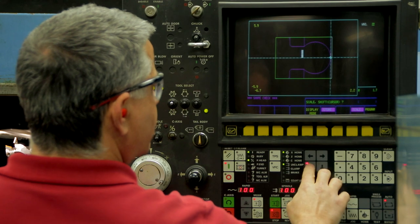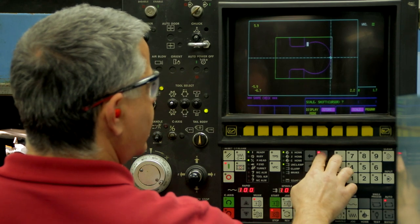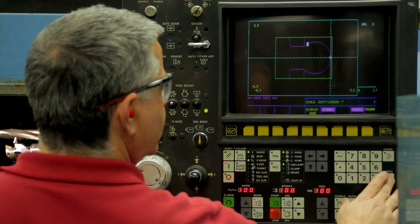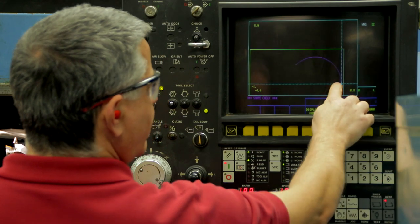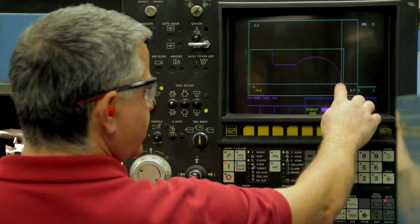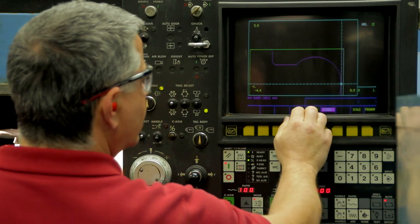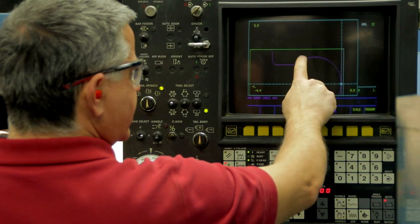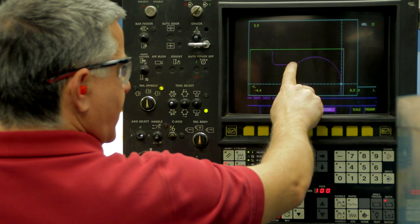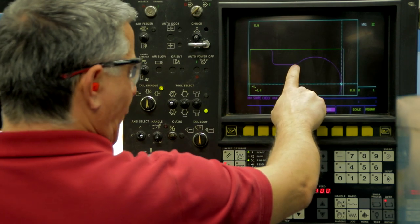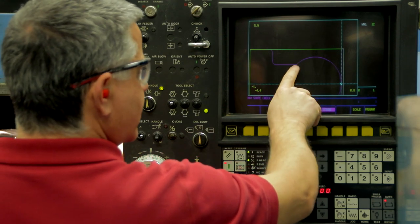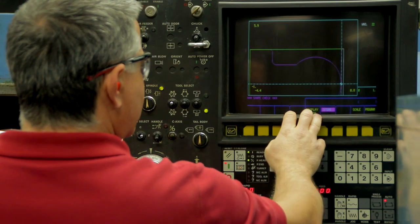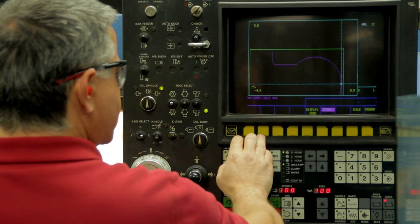And we're going to zoom in on the top half of this part. So we're going to say scale. Move the arrows to where the center of the screen would be. And then put a smaller value in here, like 1. And now we're programming from, you can see the graphics from the center line up. And again, this geometry, we're not going to be able to rough out the entire geometry with the 55 degree diamond because this end of the ball is steeper than 30 degrees.